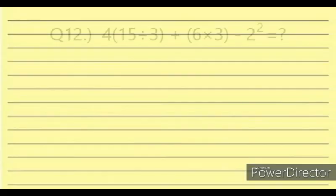Question 12. Evaluate: 4 times (15 divided by 3) plus (6 times 3) minus 2 squared.